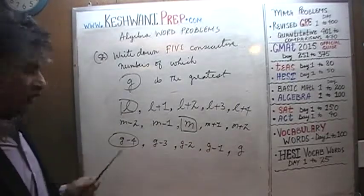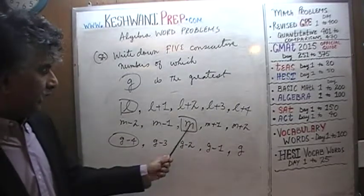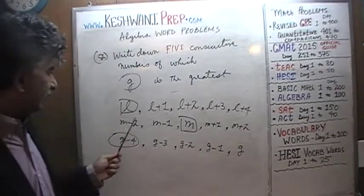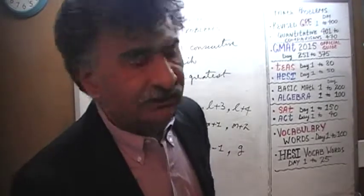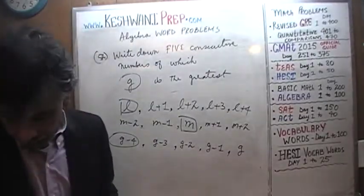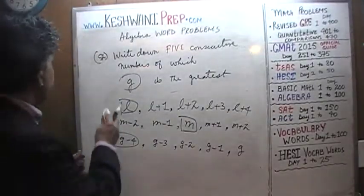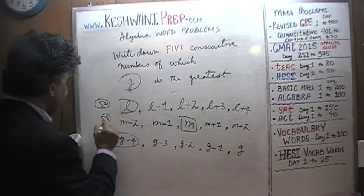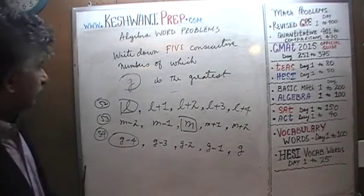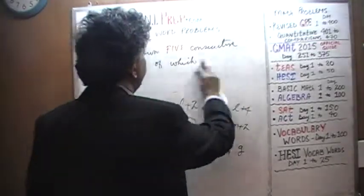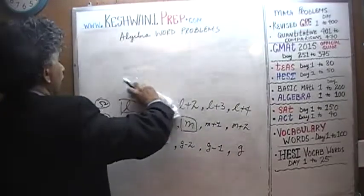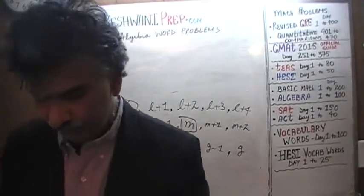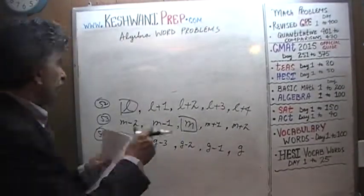Here we have represented five consecutive numbers such that M represents the one in the middle, and before that L represented the least of them. In my notation, those are problems 52, 53, and 54. Now we move on to problem number 55.